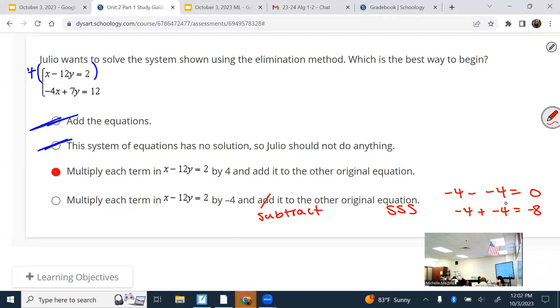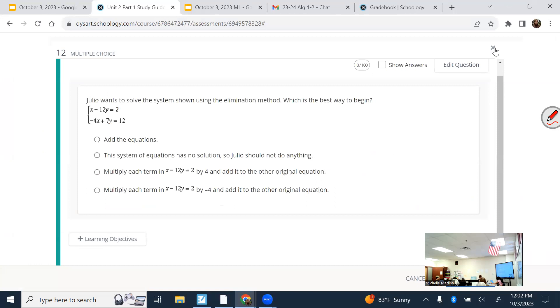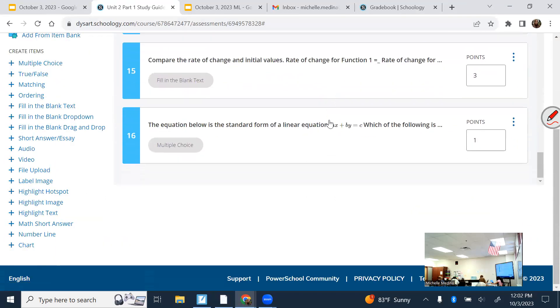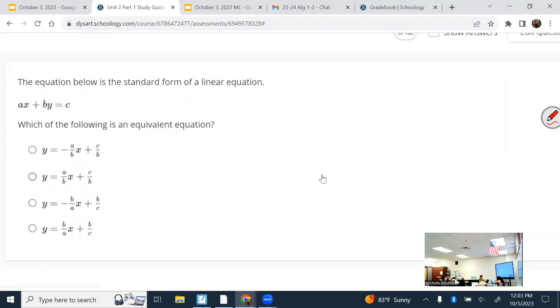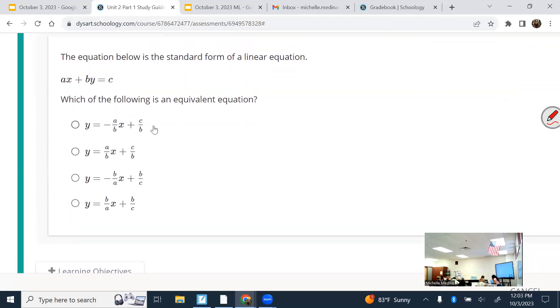All right, we might have time for one more. Anyone else? Number 16. Okay, so the equation below is the standard form of a linear equation. We want the equivalent one. So look at your answer options. What's alone in the answer options? Y. The Y. So basically, if I can get the Y alone, I found my answer. So start with what you're given. AX plus BY equals C. And we want to isolate the Y. The steps are the same, even when A, B, and C are all numbers, by the way. But I'll show you.